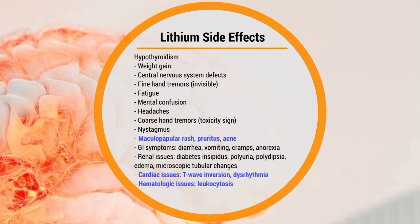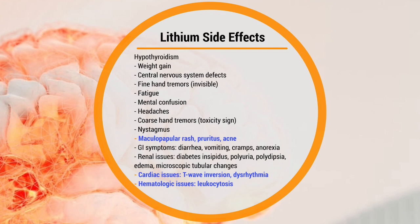Lithium will cause some side effects, and it's important to distinguish between lithium side effects — which are somewhat expected and manageable — versus lithium toxicity, which becomes more complex to manage. Lithium can cause hypothyroidism, not hyperthyroidism. It can cause weight gain, central nervous system effects, and fine hand tremors. Fine hand tremors are invisible — they are a side effect. If they become coarse, it's no longer a side effect but a sign of toxicity.